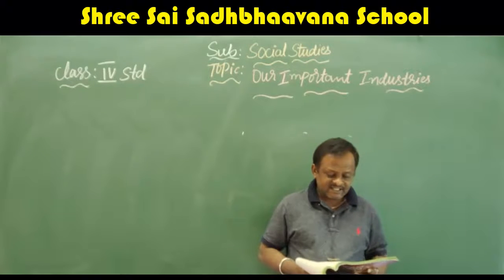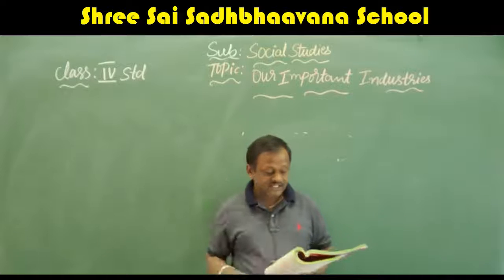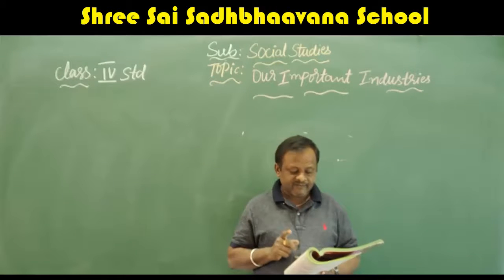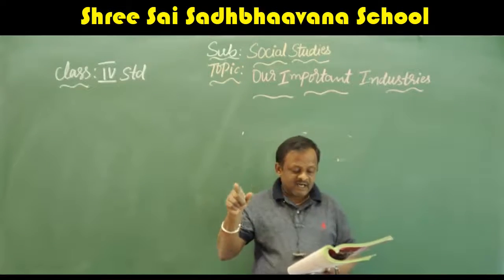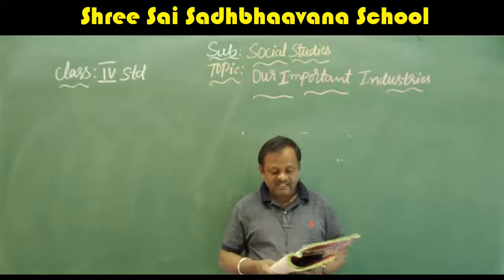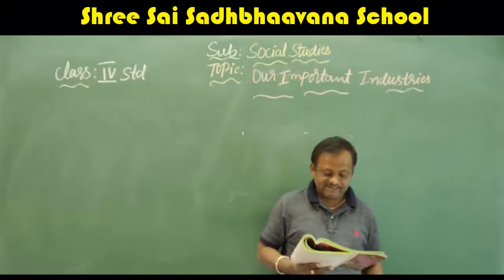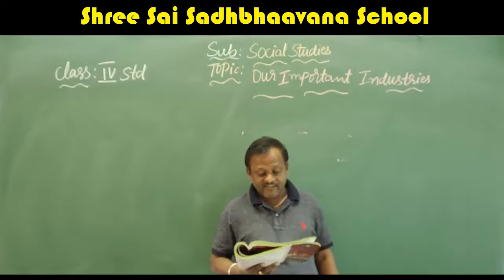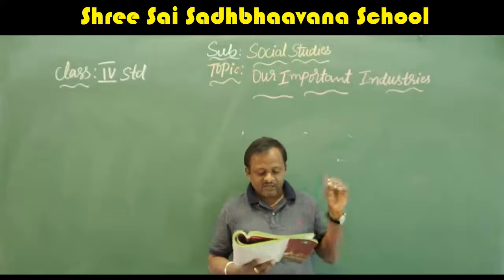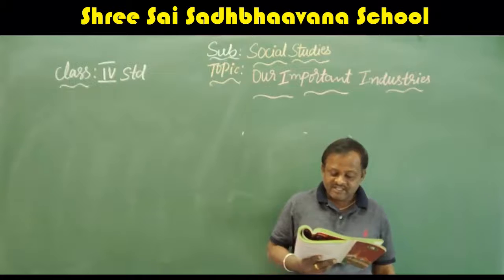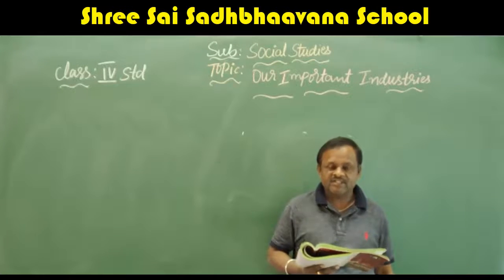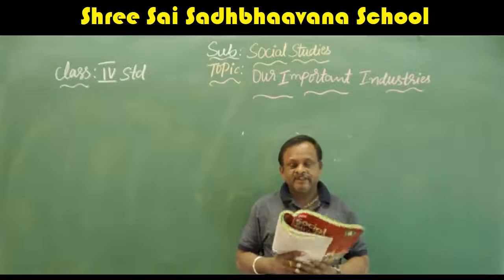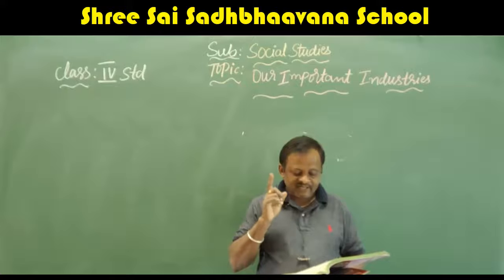Did you know? Tata Iron and Steel Industry is the largest steel industry in Asia. Bengaluru, Pune, and Hyderabad together are known as the 'Golden Triangle' for development of information and technology industries. Vishakhapatnam has the largest ship-building yard in our country. Ahmedabad is known as the Manchester of India due to its great growth in cotton textile industries. Anand in Gujarat is famous for its dairy product industries under the brand name Amul — Anand Milk Union Limited — producing milk, butter, cheese, and other dairy products.